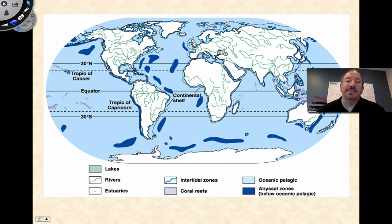Then we have intertidal zones, where the water meets the land, with high tide and low tide. An estuary is kind of cool — if you're familiar with the San Francisco Bay, that's an estuary, which is a mixture of marine water with 3% salt and fresh water. So it's an in-between that'll vary — a combination of fresh and salt water.